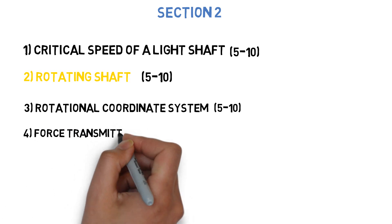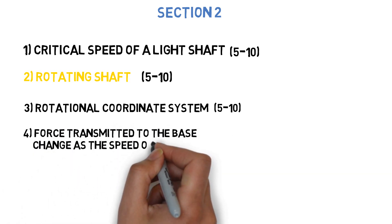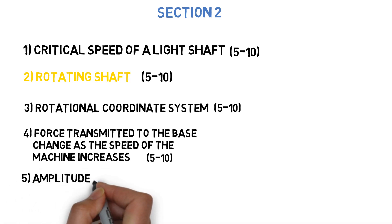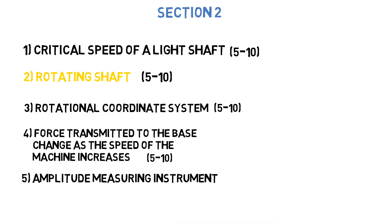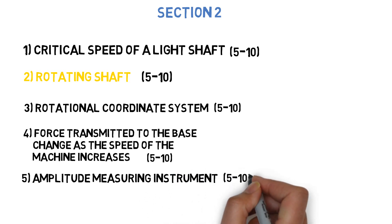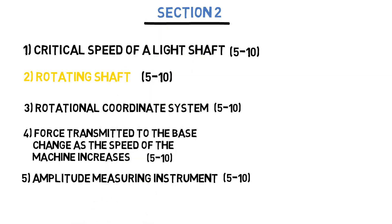Next question: how does the force transmitted to the base change as the speed of the machine increases? Explain using an equation and the corresponding graph. This can come for 5 to 10 marks. The last question for section 2 is: explain the principle of vibration measuring instruments and the working principle of any one amplitude measuring instrument. This can come for 5 to 10 marks. These are the 10 questions you need to do in sections 1 and 2.